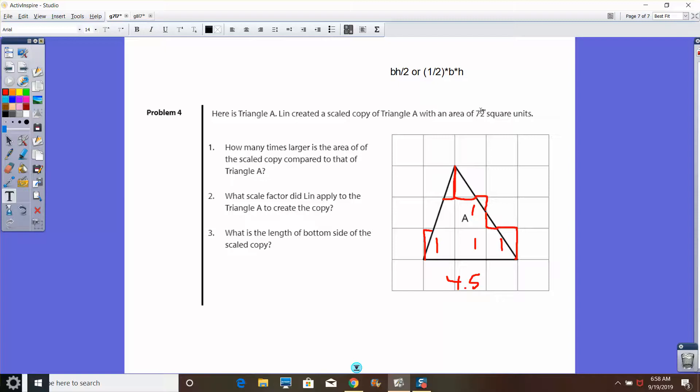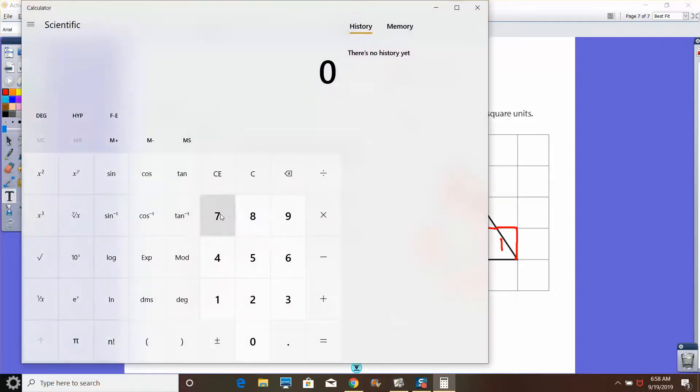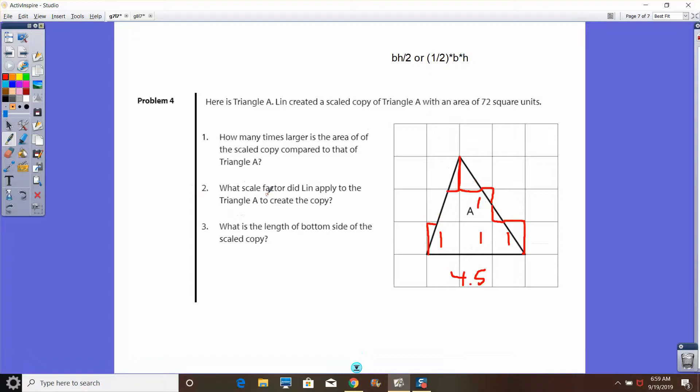So the area of this triangle is 4.5. Now, how many times bigger is that to 72? If I want to figure that out, I'm going to do 72 divided by 4.5, and I believe that is going to be about 16. Let me use a calculator just to make sure, 72 divided by 4.5, 16. So 16 times. Now, based on that, this is the deal though, here's the tricky part.